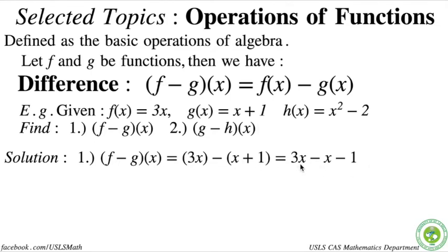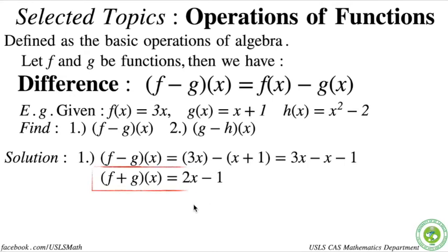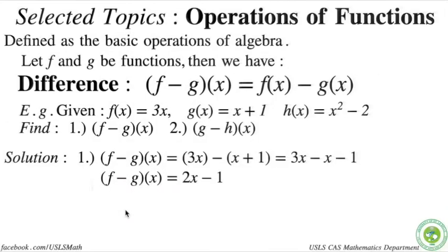Next, we combine like terms: 3x minus x. There's an imaginary 1 in front of x, so 3x minus 1x equals 2x. Copying the minus 1, we get f minus g of x equals 2x minus 1. That is our final answer for number 1 of the difference operation.